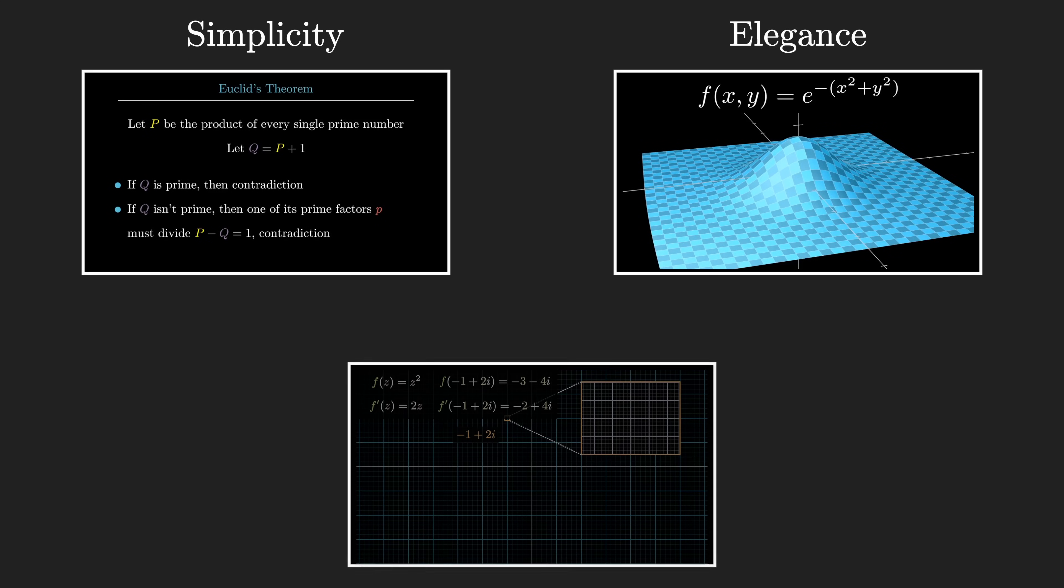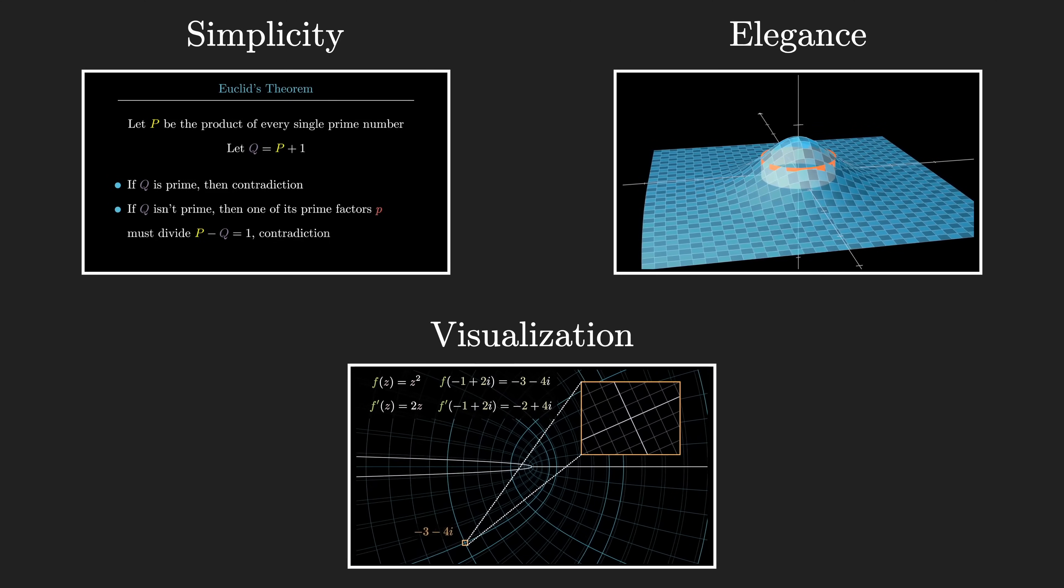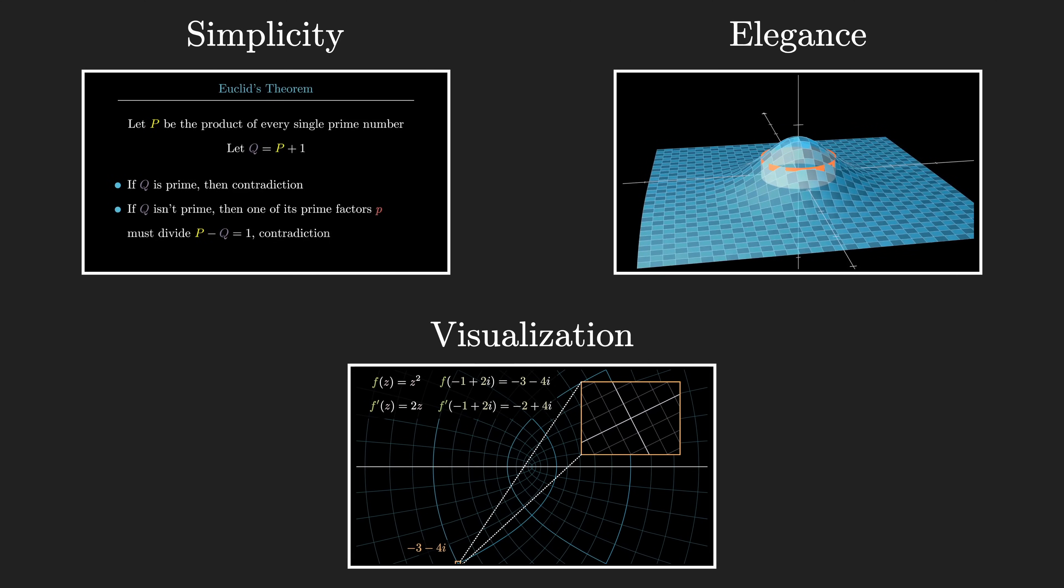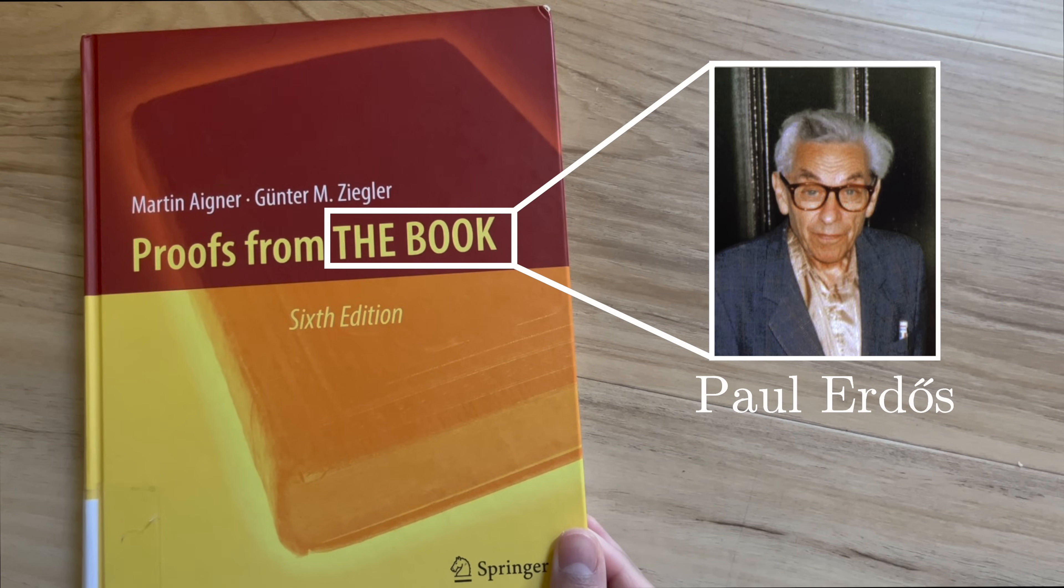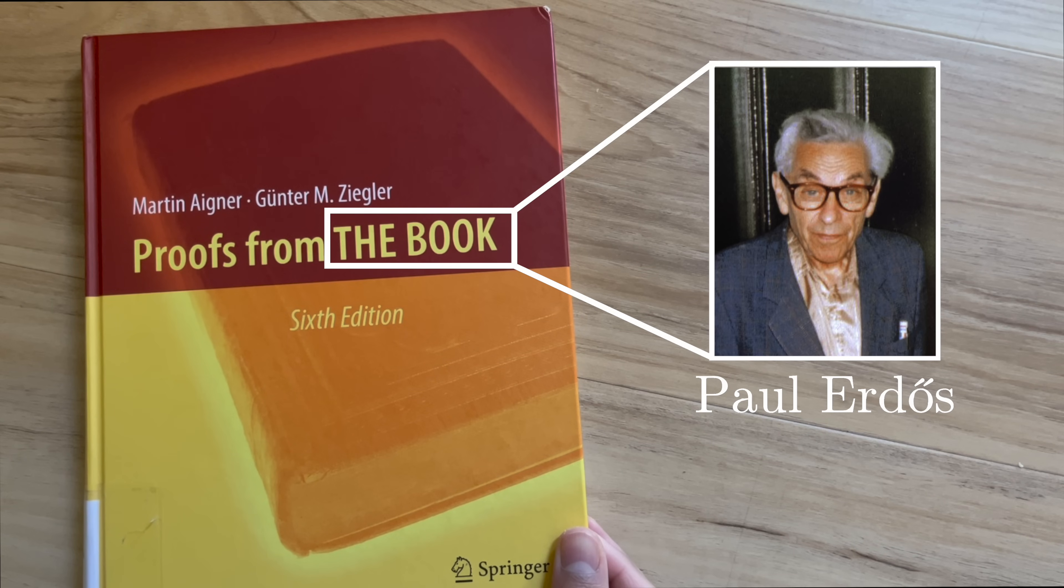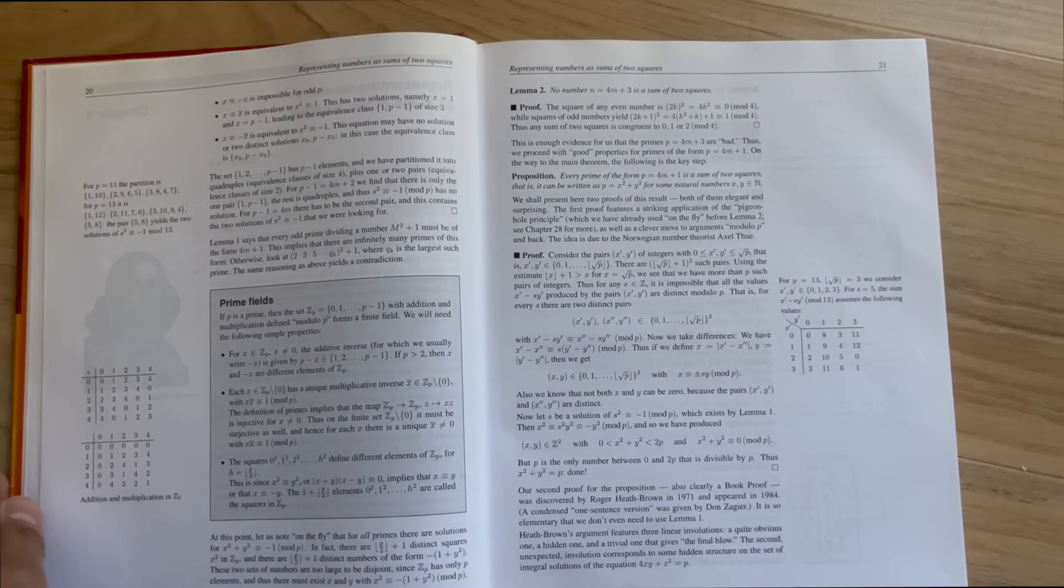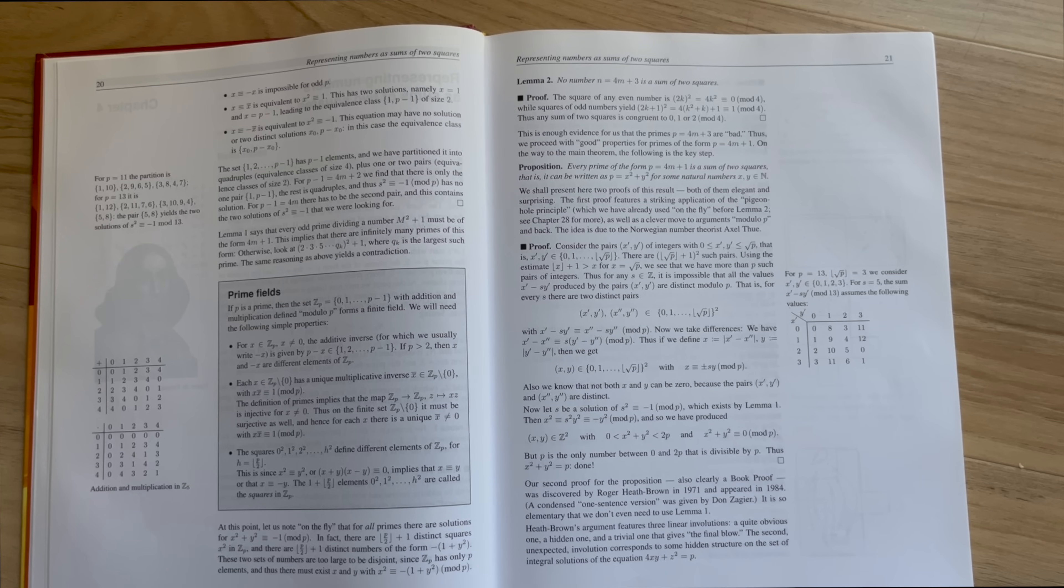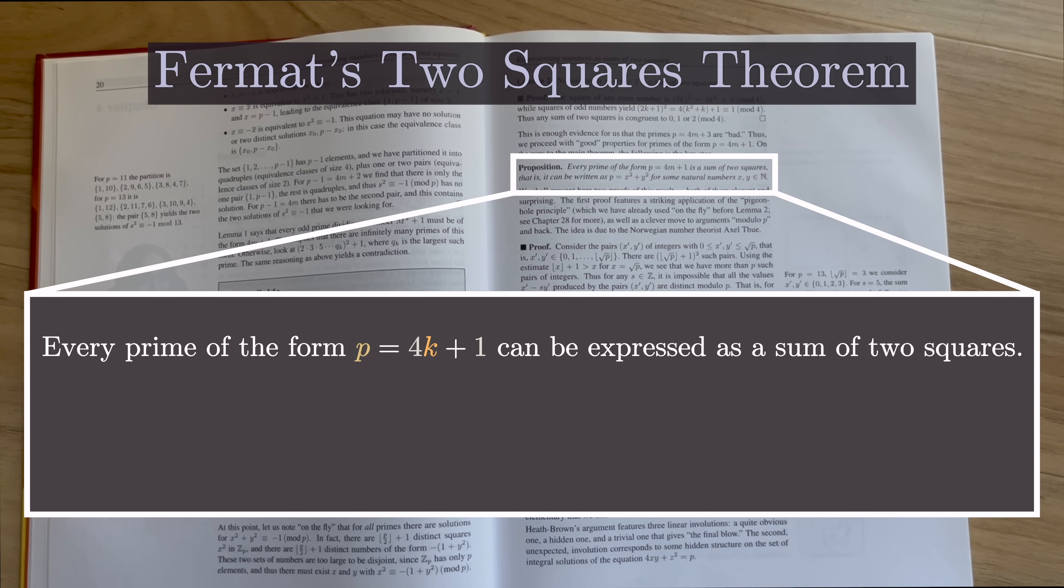What makes a proof beautiful? Maybe simplicity, elegance, or a nice visual. To me, a proof is beautiful when it forms surprising connections between unrelated aspects of math. There's a famous book in math called Proofs from the Book - the book is a term coined by Paul Erdős that refers to a book in which God kept the most elegant proofs of every mathematical theorem. Let's turn to Chapter 4, which is all about representing numbers as sums of two squares.